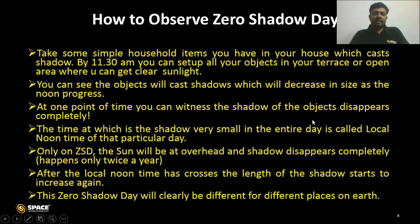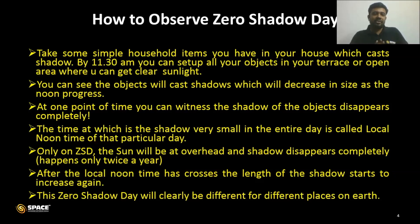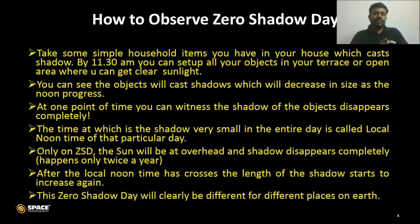Now let us see how to experience and enjoy the beauty of this celestial event. Take some simple household items that cast a shadow. On April 24, around 11:30 AM, set up your objects on your terrace or in an open area with clear sunlight and no obstruction. You will see the shadow length decrease as noon approaches. At one point, you can witness the shadow of the objects disappear completely. This happens for a short duration of one or two minutes. The time at which the shadow is smallest is the local noon time. But only on zero shadow day does the shadow disappear completely. After noon, the shadow length starts to increase again. Zero shadow day is completely latitude-dependent and will differ from place to place.